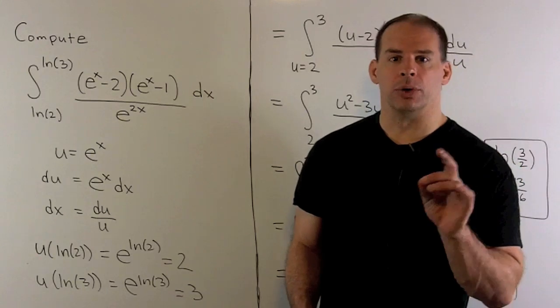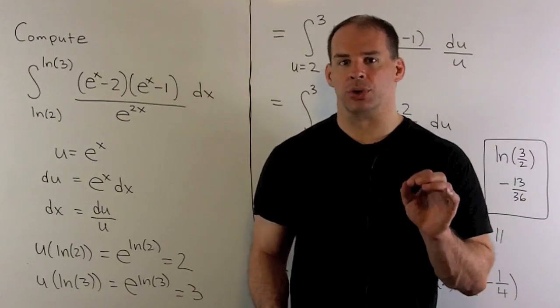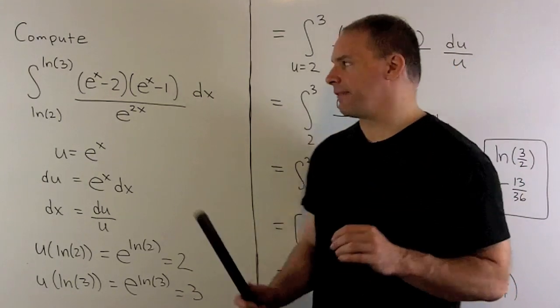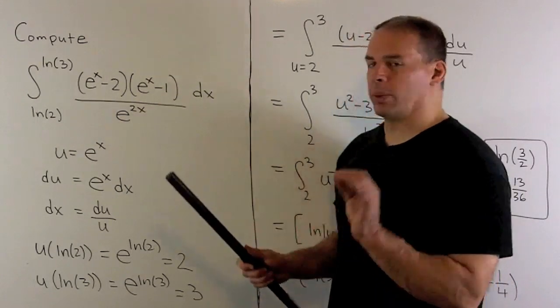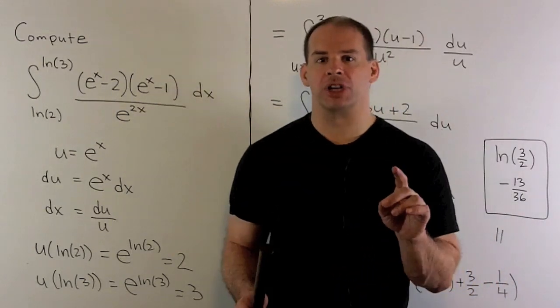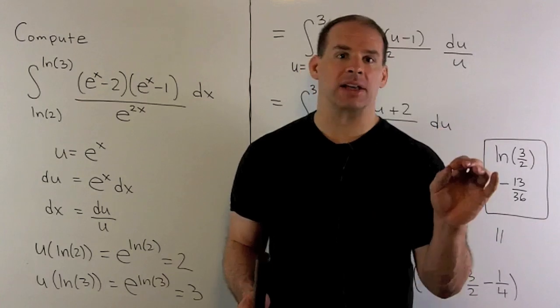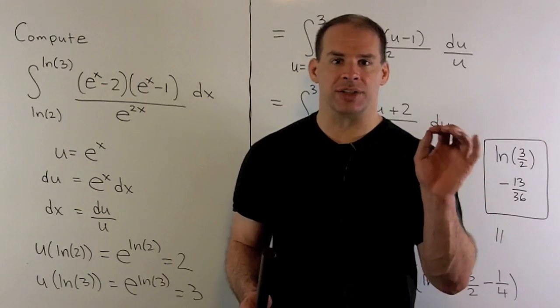Now, we're going to use integration by substitution. Here, I have a composition. So what we have is a rational function evaluated at e to the x. So e to the x is our inside function.